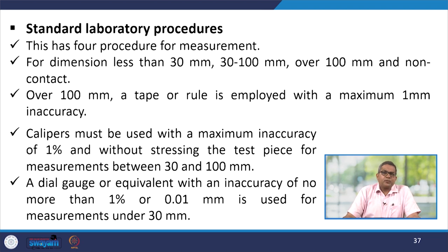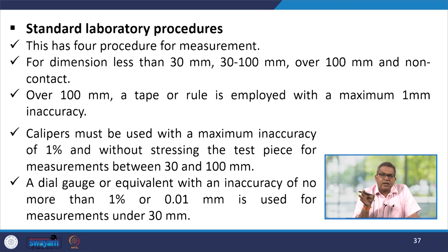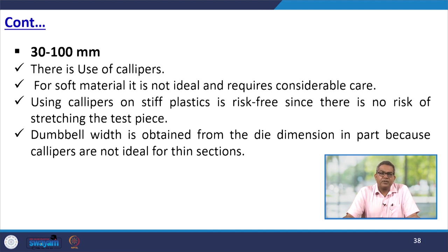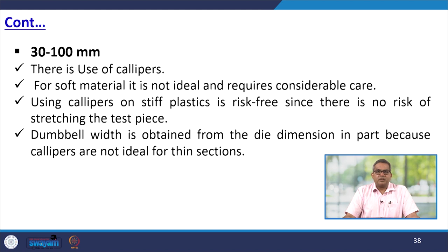The standard laboratory procedure has four categories for dimension measurement: less than 30 mm, 30 to 100 mm, over 100 mm, and non-contact. For over 100 mm, a tape or rule is employed with a maximum 1 mm inaccuracy. For 30 to 100 mm, a caliper must be used with a maximum inaccuracy of 1% without stressing the test piece — using a caliper on stiff plastic is risk-free since there is no risk of stretching. For under 30 mm, a dial gauge with an inaccuracy of not more than 1% or 0.01 mm is used. The dumbbell width is obtained from die dimensions because calipers are not ideal for thin sections.